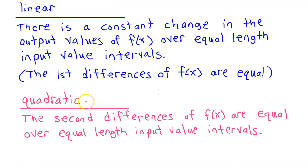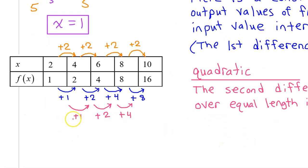A quadratic model will be best if the second differences of f of x are equal over equal length input value intervals. I've shown the second differences here in red, and they are not equal either, so a quadratic model is not a good fit for f of x.